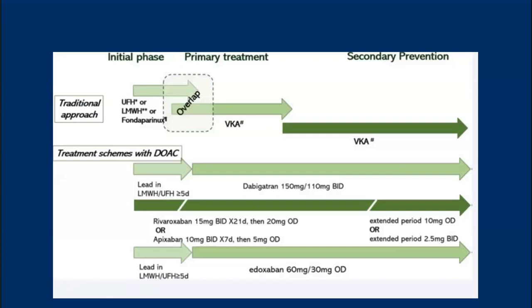That covers the approach and management of PE. Moving to the Q&A — the first question from Dinka: Can pulmonary embolism occur without the formation of thrombus? Yes, as already discussed, other factors like fat embolism and amniotic fluid embolism can also cause pulmonary embolism. These are rare cases, but they can occur.